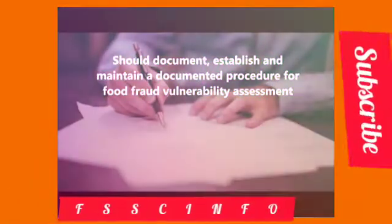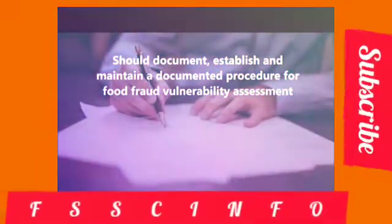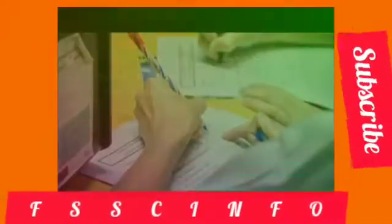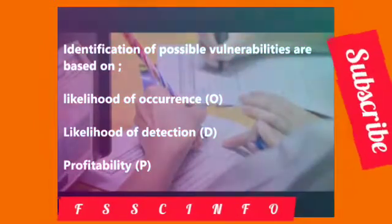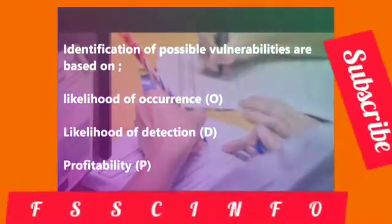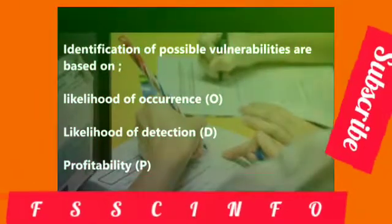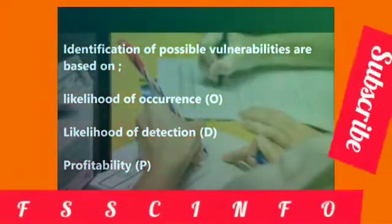The organization should document, establish, and maintain a documented procedure for food fraud vulnerability assessment. Identification of possible vulnerabilities are based on likelihood of occurrence, likelihood of detection, and profitability. Therefore, all information related to raw materials are categorized under them. Assessment of vulnerabilities are based on a PRN score.